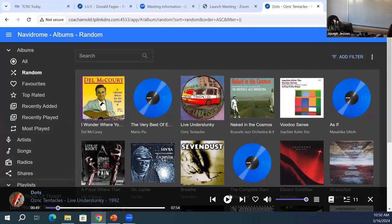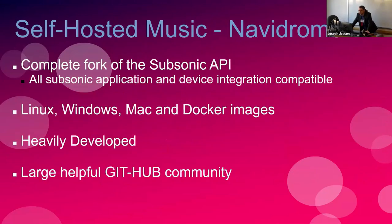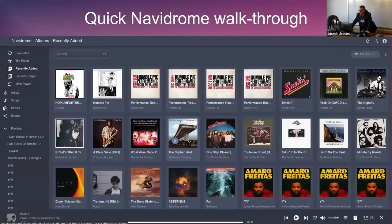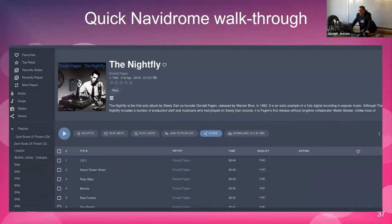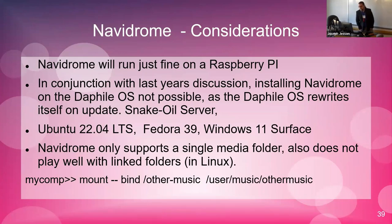It's set up in the config file to run on port 4533 when you first install it. Just some considerations for installation: most folks say it will run just fine on a Raspberry Pi. On mine I had it pointed to a couple of places on my network, so it runs fine across the network in terms of where it's grabbing music from.